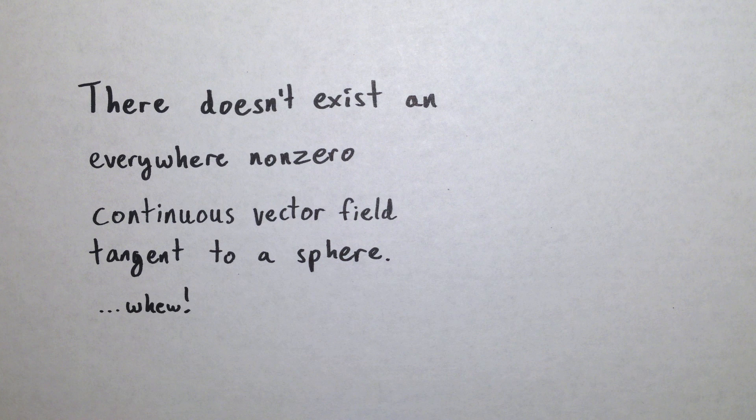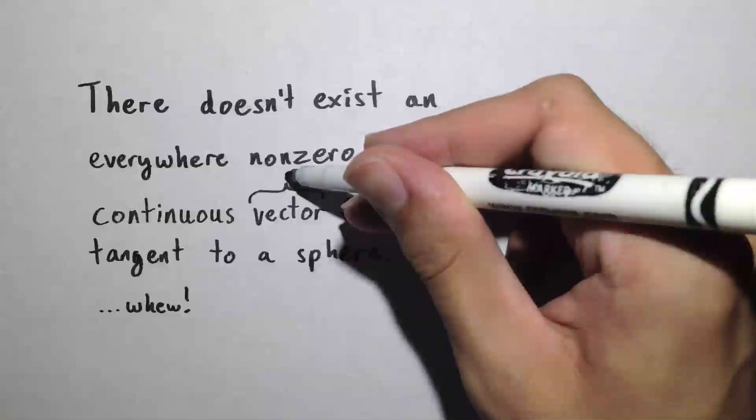A vector is, for our purposes, just an arrow. It has a direction and a length. A vector field is when we put a vector at each point in some space.